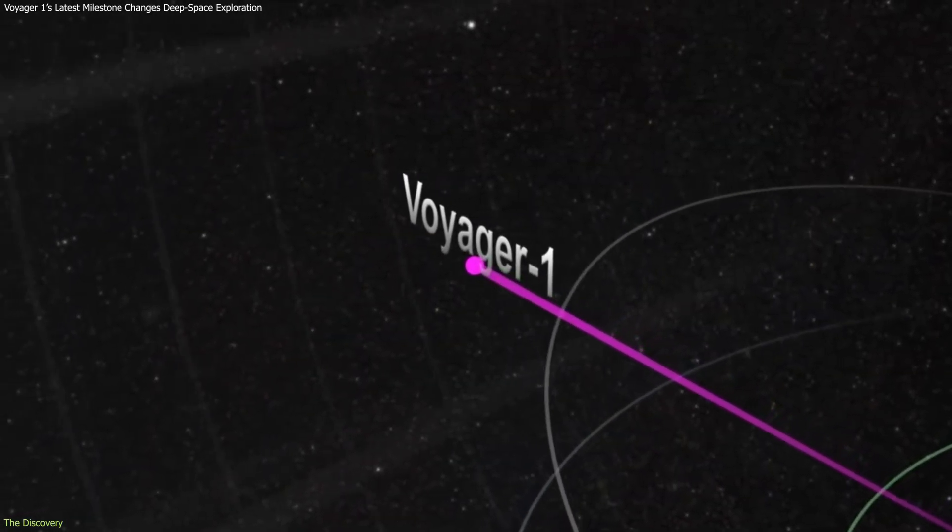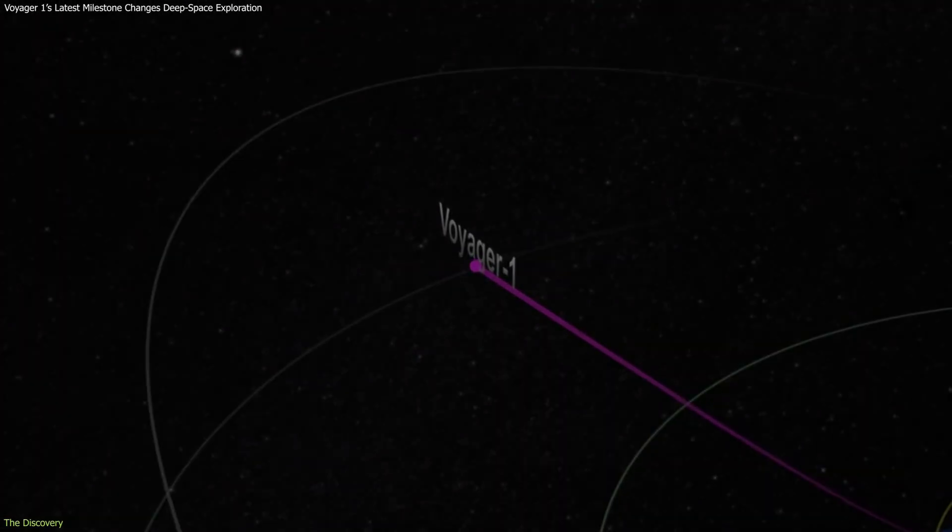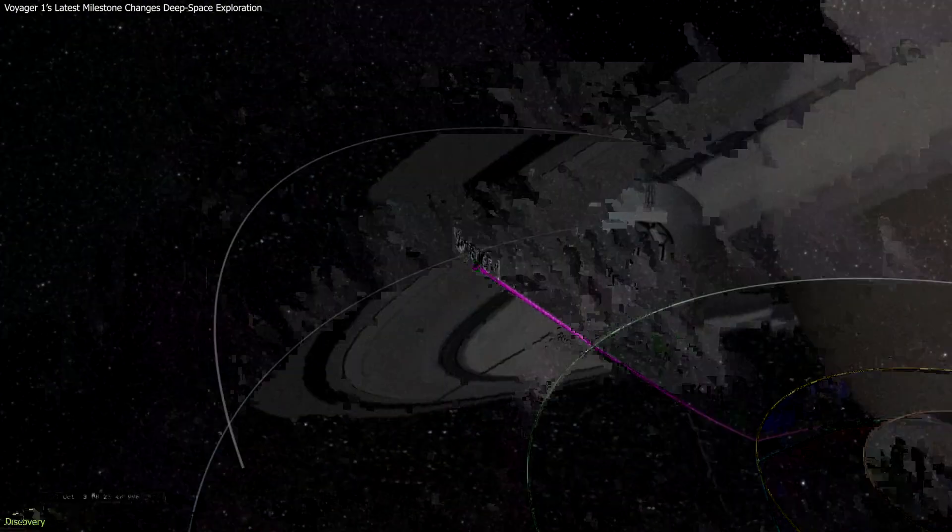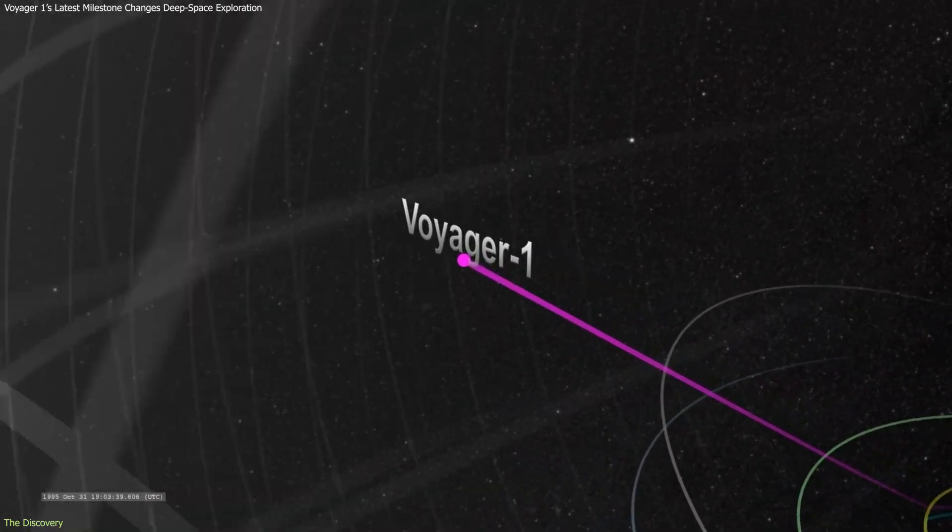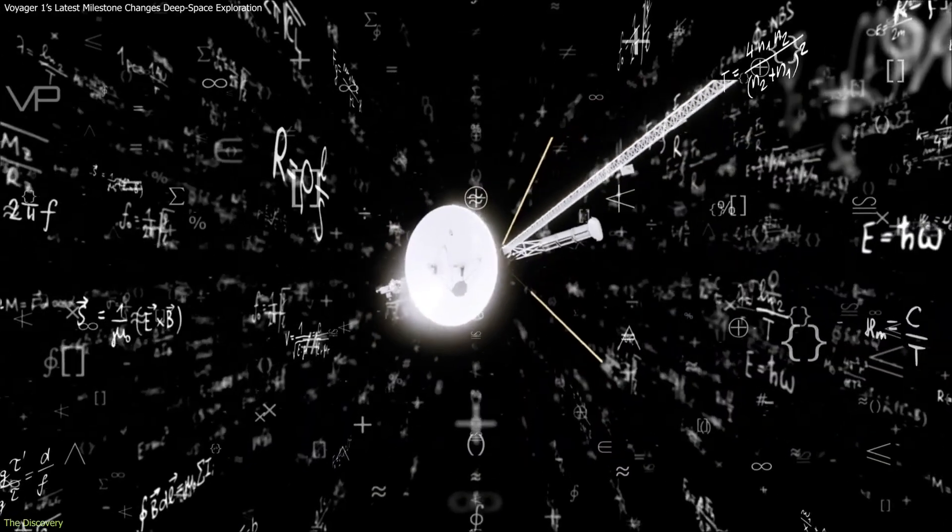Voyager's long, uninterrupted trajectory is another reason this milestone is notable. After its encounter with Saturn in 1980, the spacecraft followed a path out of the plane of the solar system and has never changed course. This consistency allows engineers to calculate its distance with precision.